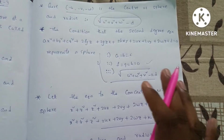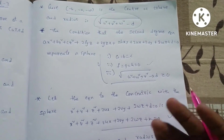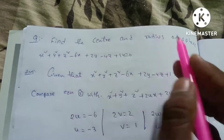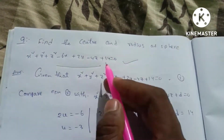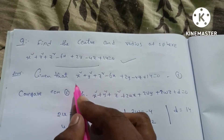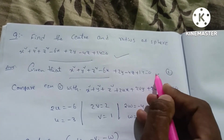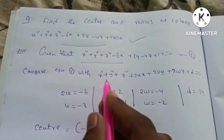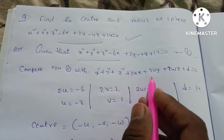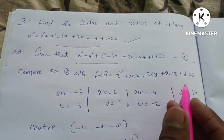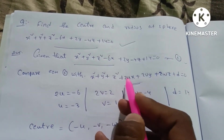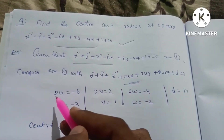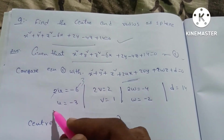Now let's solve a problem. Find the center and radius of the sphere. We will compare the given equation to the general formula: x square plus y square plus z square plus 2ux plus 2vy plus 2wz plus d equals 0. Comparing: 2u equals minus 6, so u equals minus 3.